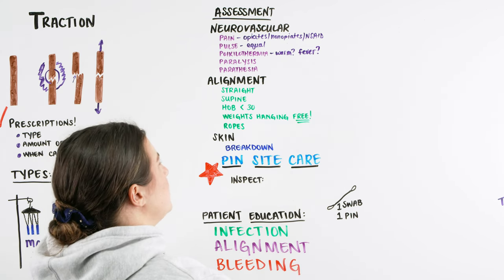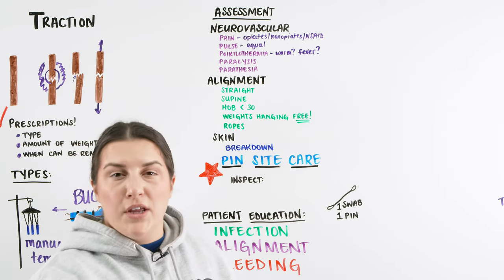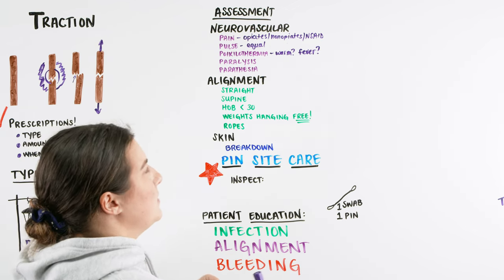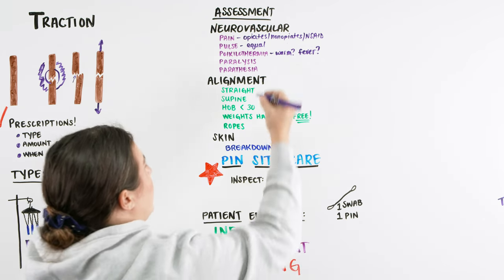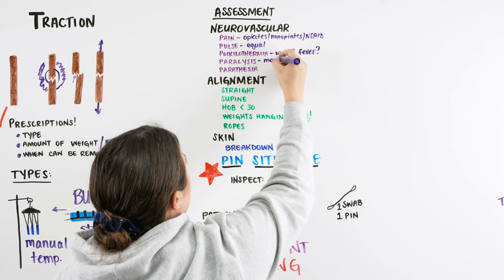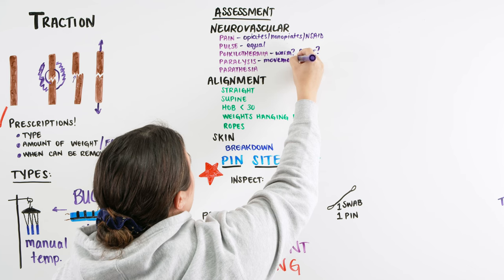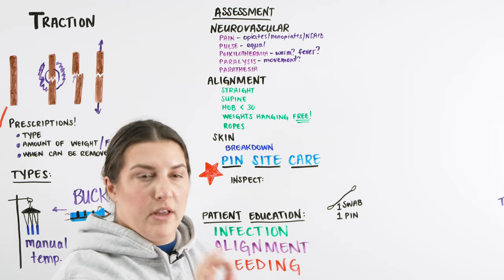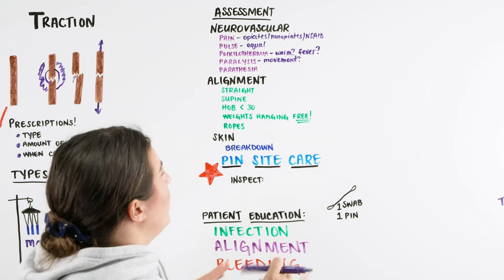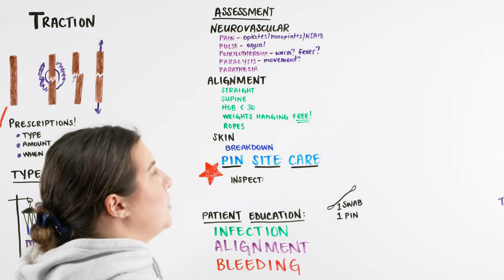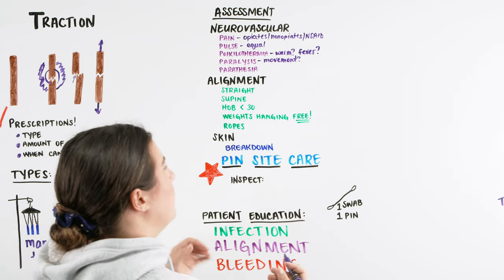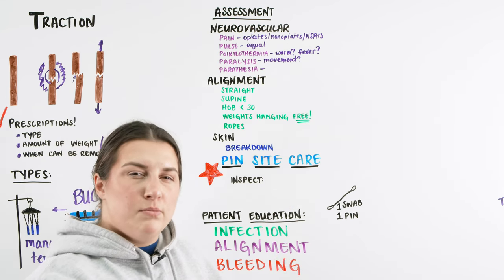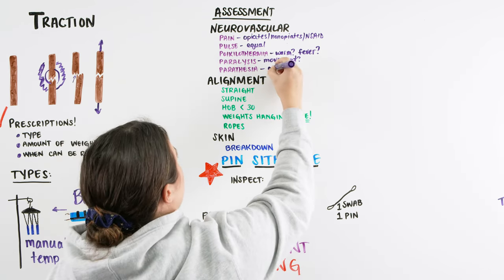The next part of the neurovascular assessment is paralysis. If allowed, ask the patient to wiggle their toes or move the extremity to confirm movement is still present despite the trauma. This must be within the scope of the injury — you wouldn't ask a patient with a broken ankle near the tibia to roll their ankle around. Finally, assess paresthesia: can the patient feel your touch? Are they experiencing pins and needles? That sensation tells us a lot about neurovascular status.